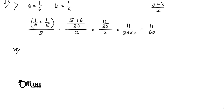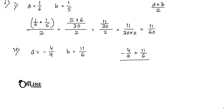For the fourth sum, a = -4/9 and b = 11/6. I hope you can solve the second and third ones on your own. First, find the addition: -4/9 + 11/6, then divide by 2.